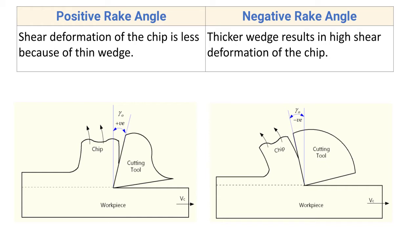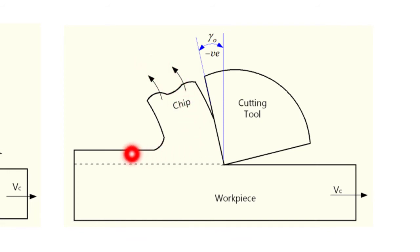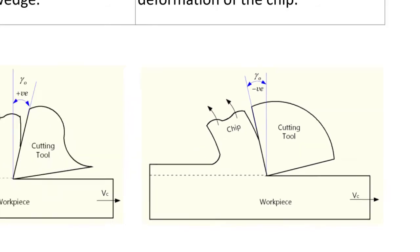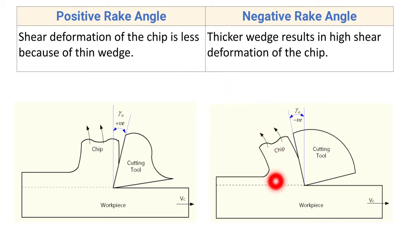For negative rake angle, a thicker wedge results in high shear deformation of the chip. Here the wedge of the cutting tool, or the tool tip, is thick, and due to this there is high shear deformation of the chip. Comparing both cases, you can see the direction of chip flow — the chip is deforming more in the case of negative rake angle.